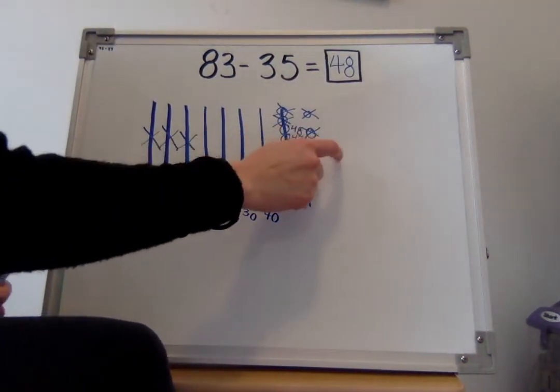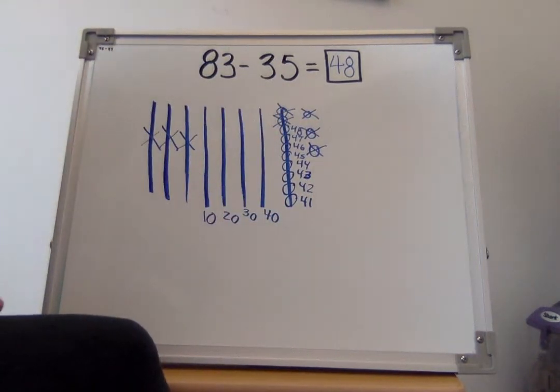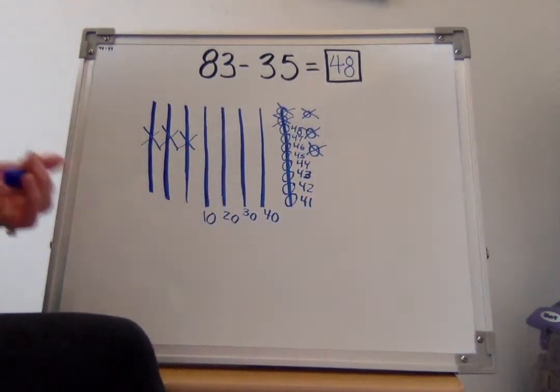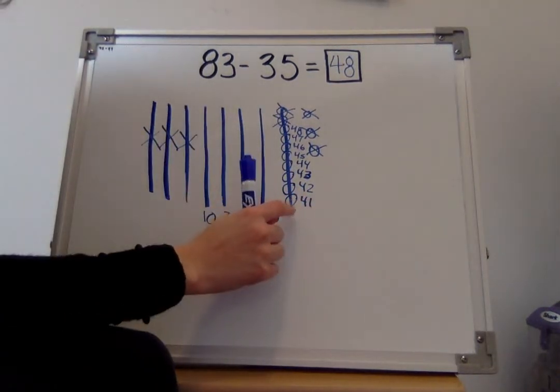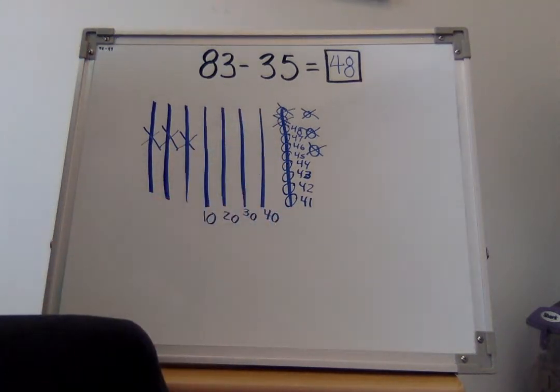If we don't have enough ones, we can turn a 10 stick into 10 ones. It's called a 10 stick because it has 10 ones inside of it. If we need more ones, we can always borrow some from a 10 stick. Turn it into 10 ones and then we can take away. Sound good? Awesome.